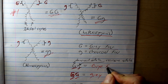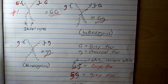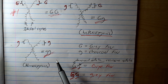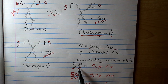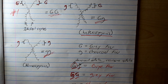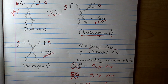The dominant allele codes for gray fur, so an animal with a dominant and recessive allele would have gray fur. If we have a genotype of two recessive alleles, written as two lowercase letters, the animal will express the recessive phenotype — charcoal fur. So only in cases where there are two recessive genes will the recessive gene be expressed as the phenotype.